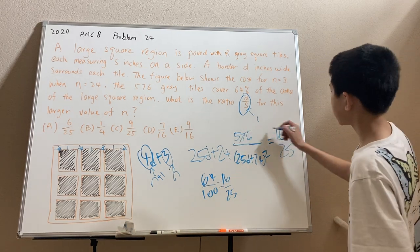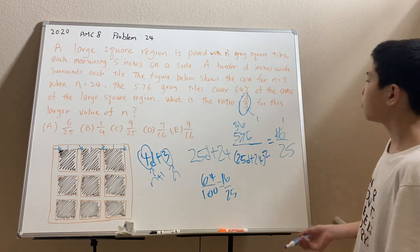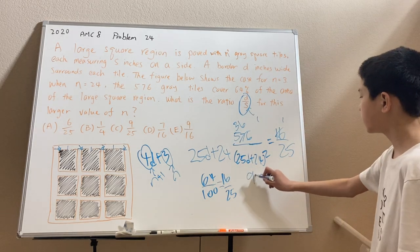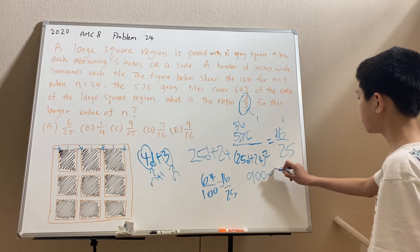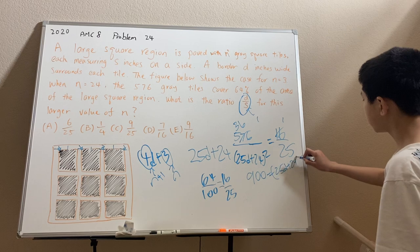And we can cancel out the numerators to get 1 and 36. And now, we can cross-multiply these numbers to get 900 equals 25d plus 24 squared.